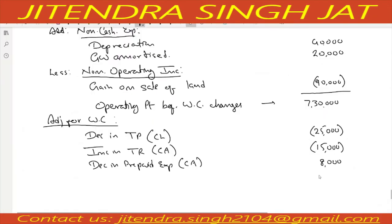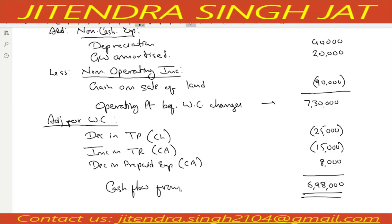All points are over. Let's do the total: 7,30,000 minus 25,000 minus 15,000 plus 8,000 equals 6,98,000. So 6,98,000 is your cash flow from operating activities. I hope this question is clear to everyone.